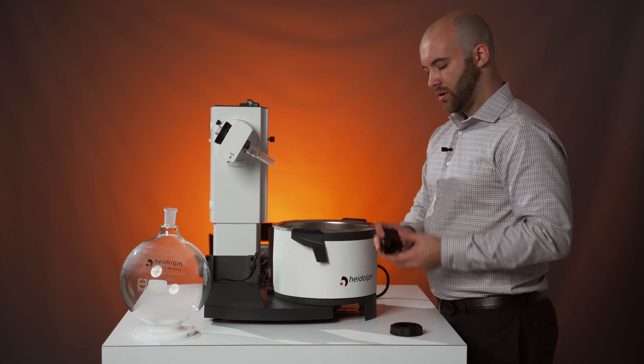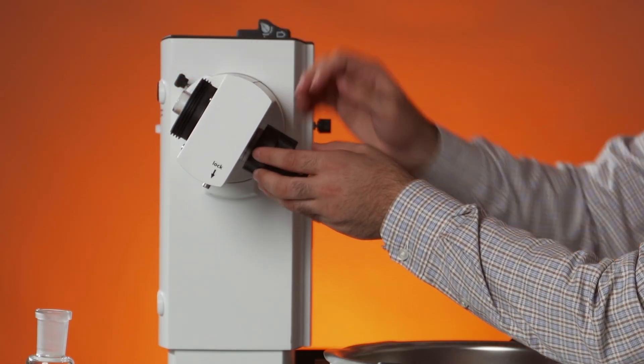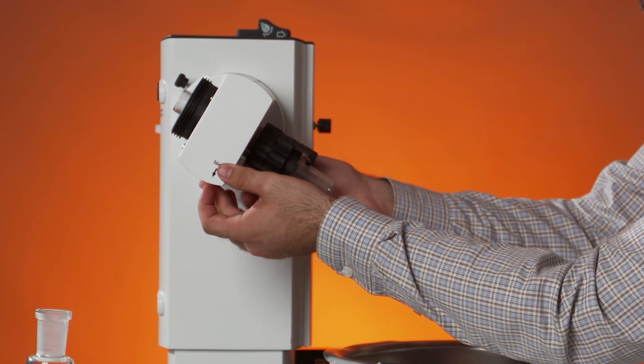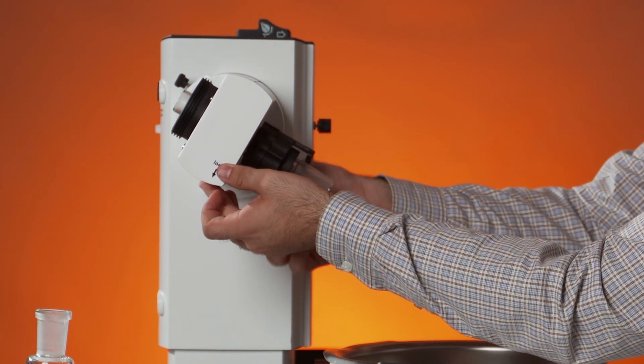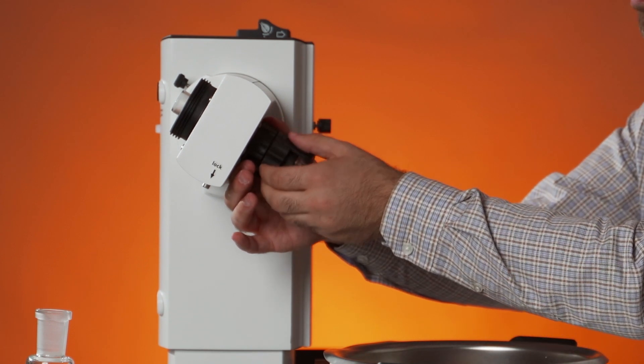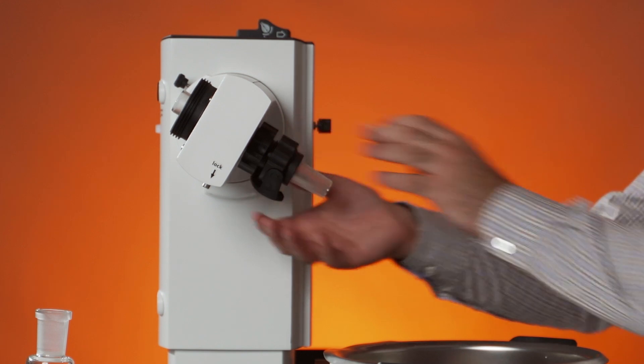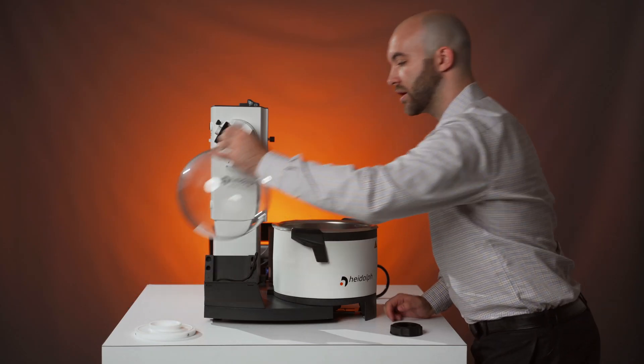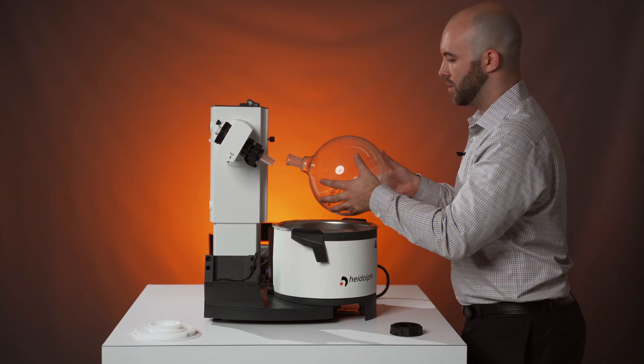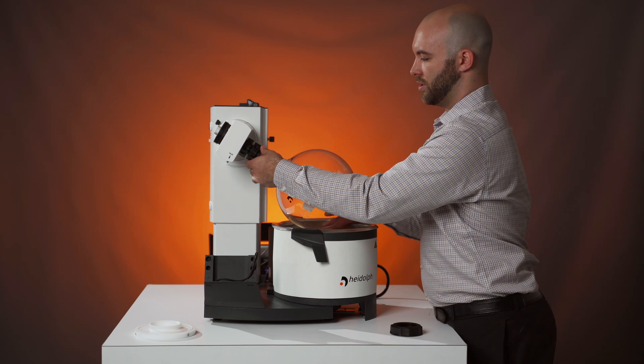After that, we can add back on the easy clip by holding this lock button. And then unscrew the clip portion of this two-piece device. Open up the swing and grab your evaporating flask, slide it over your vapor tube, clip down and tighten.